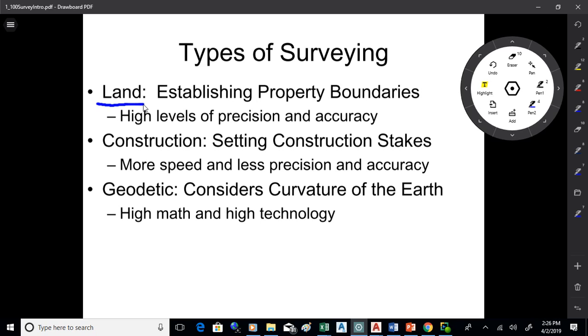People care a lot where their property's at. So you need high levels of precision and accuracy. So land surveying, one of the main rules is don't make errors or mistakes, because if you start making mistakes on property boundaries, you can get into a lot of trouble pretty fast.